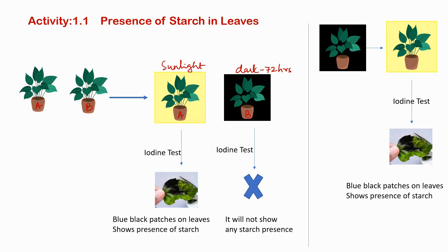After keeping Plant A in the sunlight for some time, we perform the iodine test. We pour two to three drops of iodine on the leaves, and as we can see, it gives us blue and black patches on the leaves. That means there is a presence of starch in this leaf.